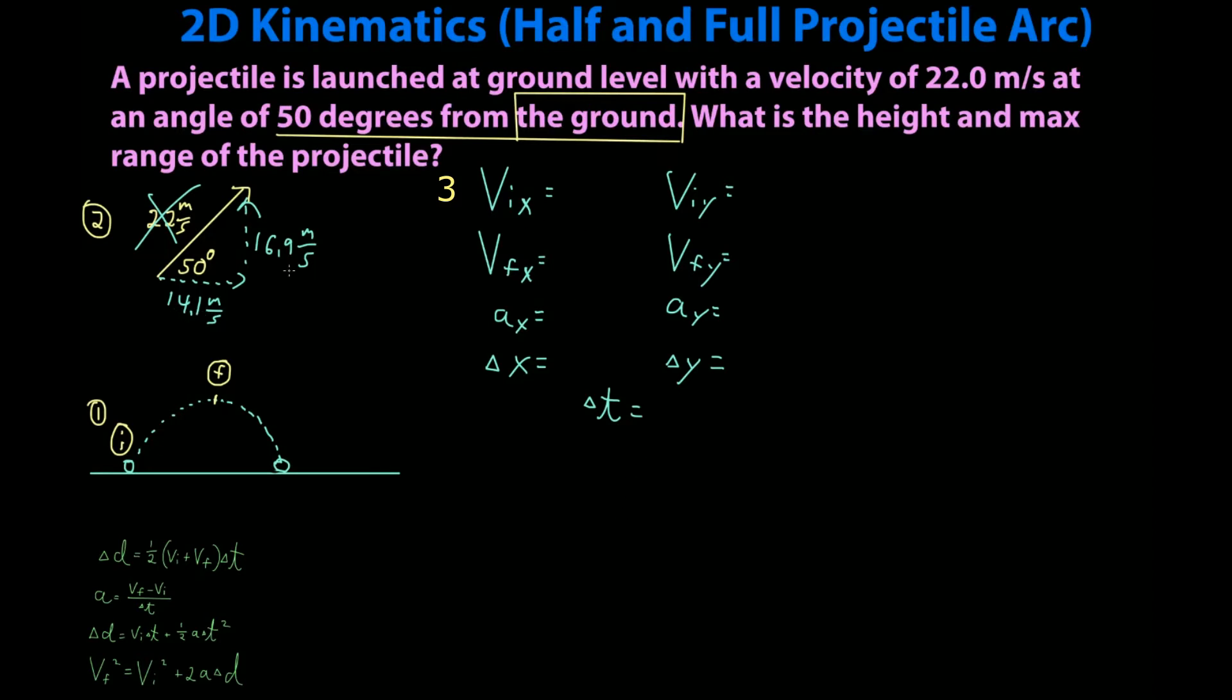VIX, we found VIX 14.1 meters per second. While I'm here, acceleration on the x-axis is zero meters per second squared. If you don't know why I'm doing this, make sure you watch my last video. There are no forces on the x-axis. If acceleration is zero, that means no change in velocity. So VFX is 14.1 meters per second. Delta x I don't know. Time I don't know.